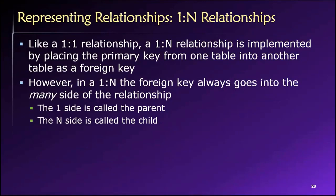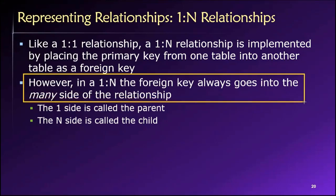These are by far the most common types of relationships that we encounter in the relational database world. And as I've said throughout our course, and I'll remind you here again, when we have a one-to-many binary relationship, we always place the foreign key at the many side of that relationship. Whichever side of the relationship has many as the maximum cardinality, that table will receive the foreign key.